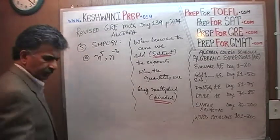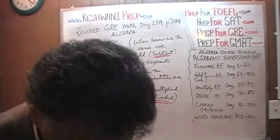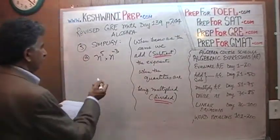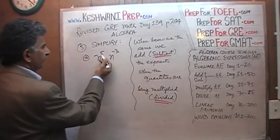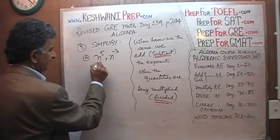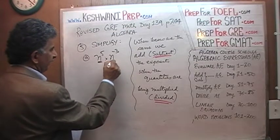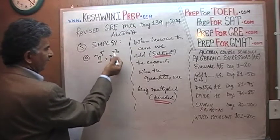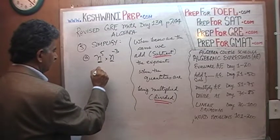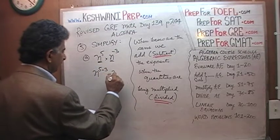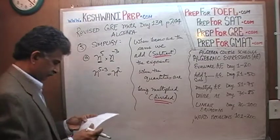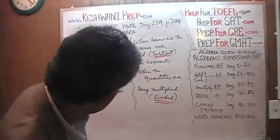So that's the rule we're going to use here. We have n raised to 5 and n raised to negative 3. Since the bases are both n, all we have to do is add the exponents. This becomes n raised to 5 plus negative 3, which is n raised to 2.